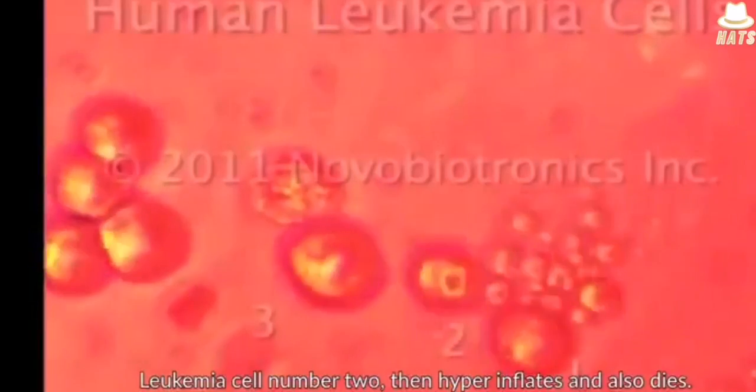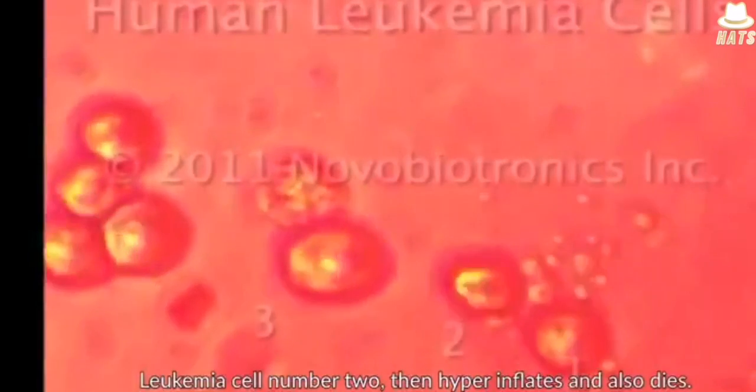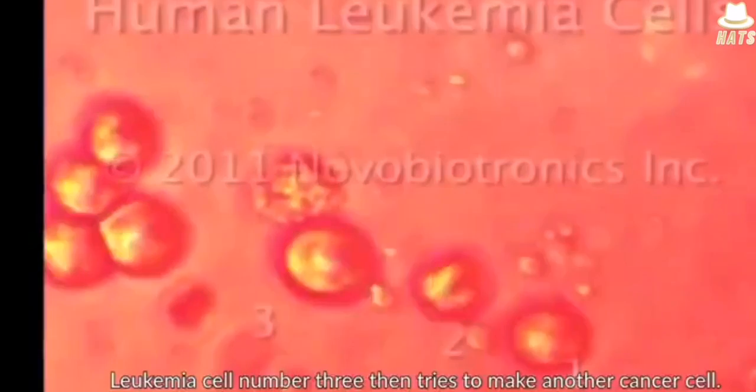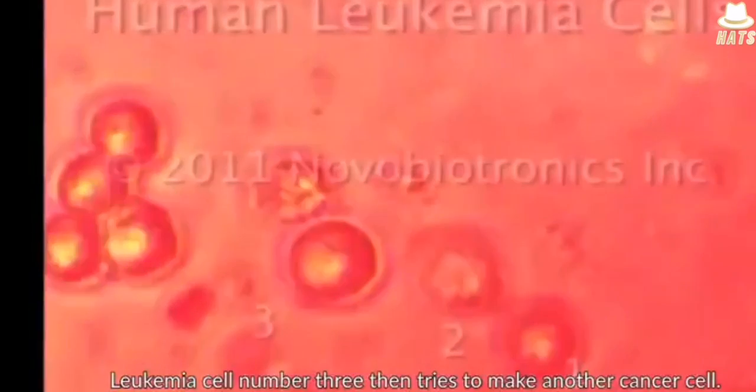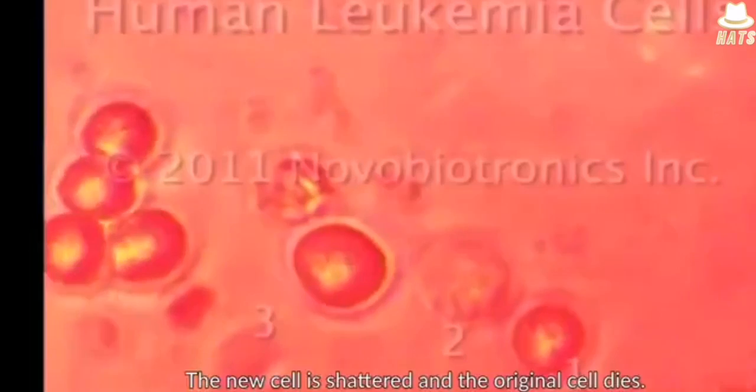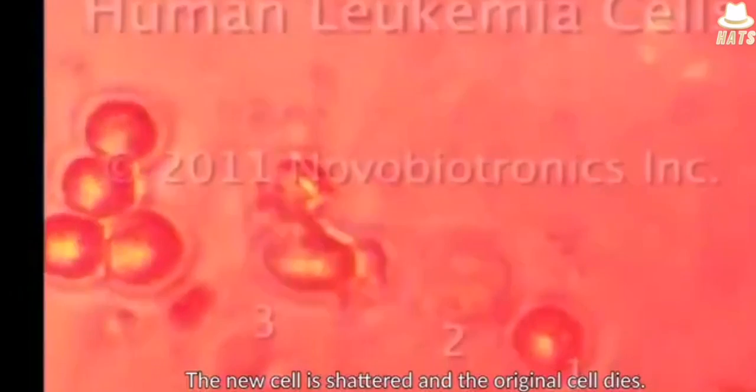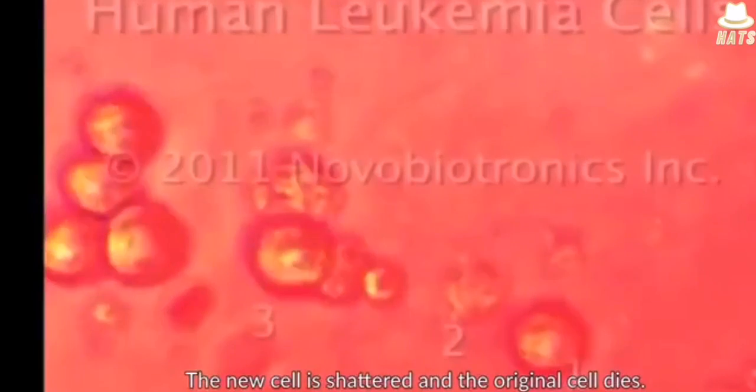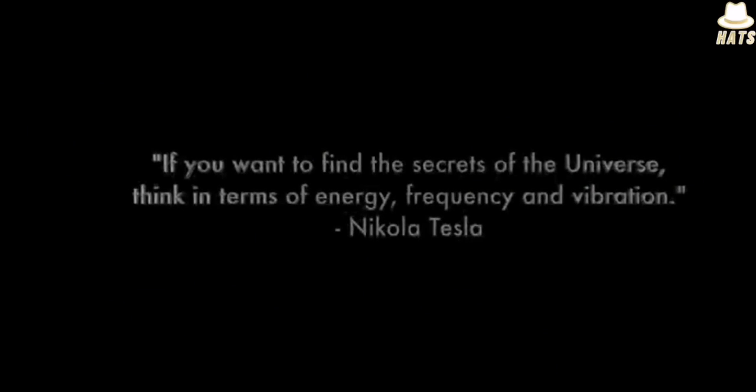Leukemia cell number two then hyperinflates and also dies. Leukemia cell number three then tries to make another cancer cell. The new cell is shattered and the original cell dies.